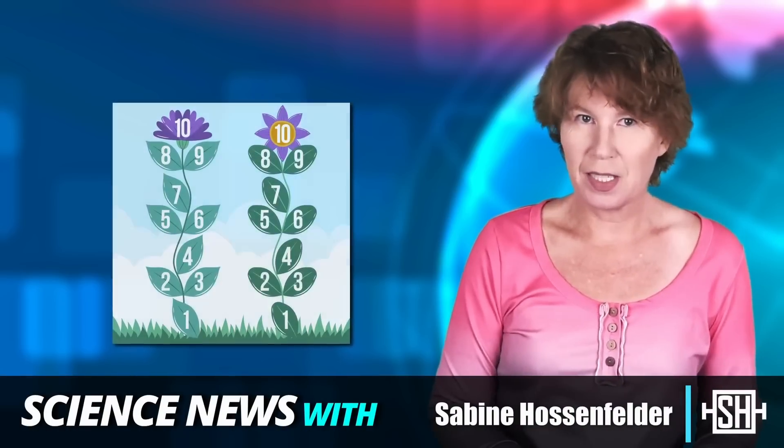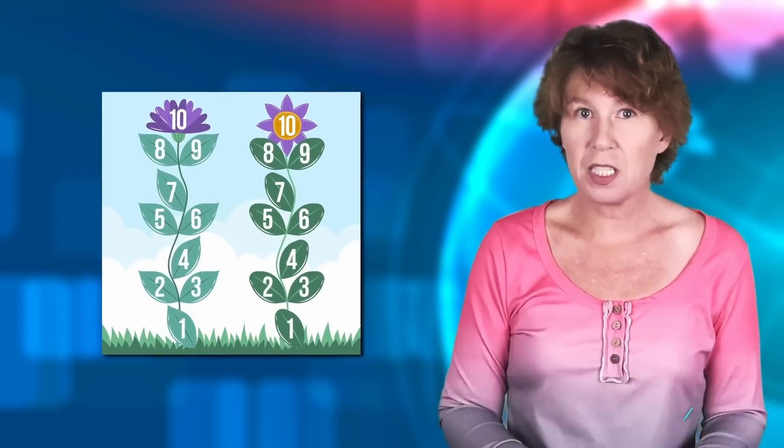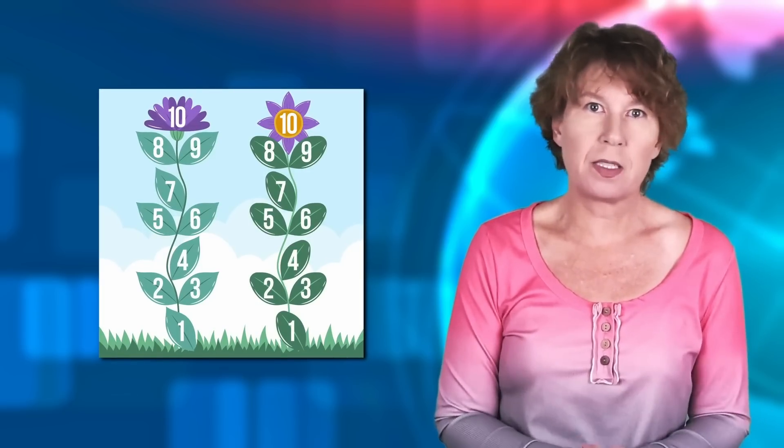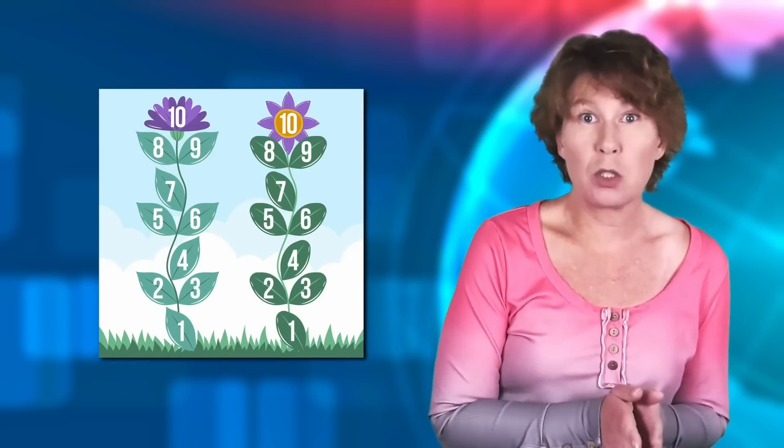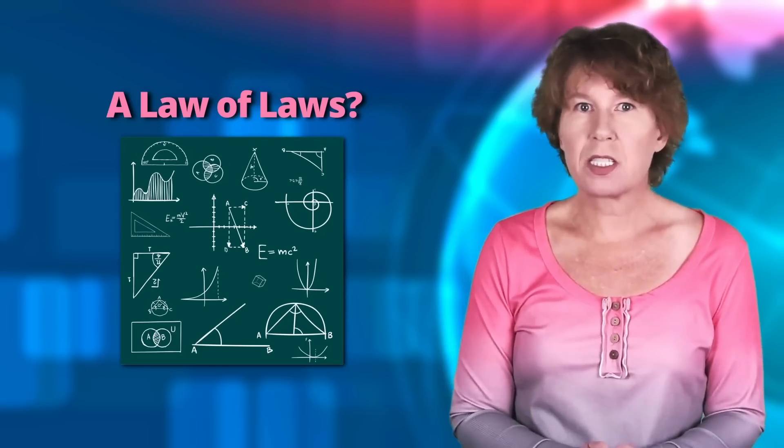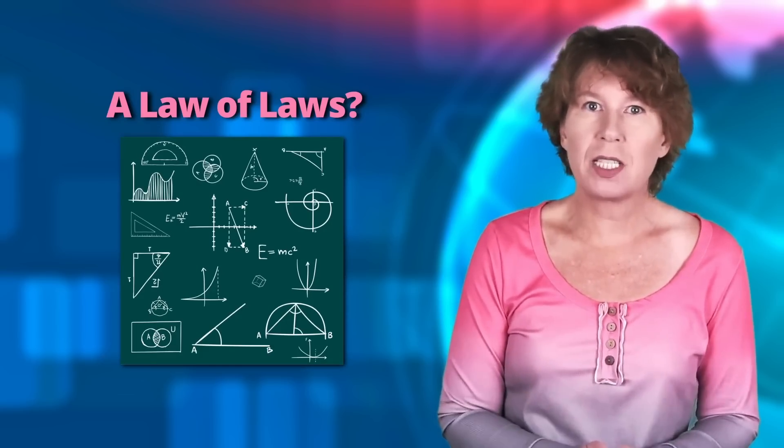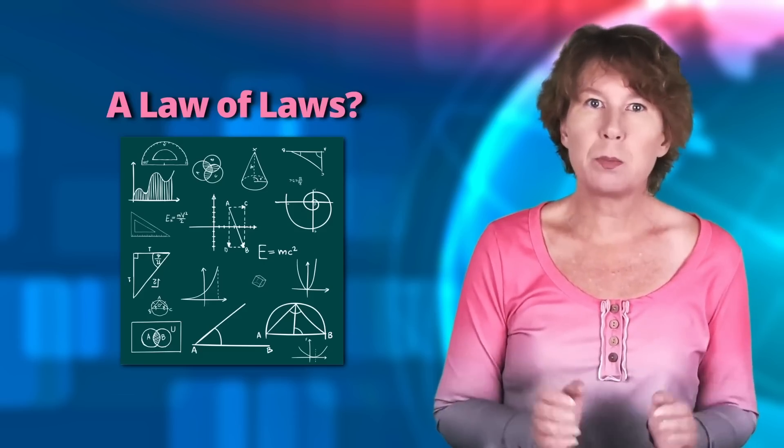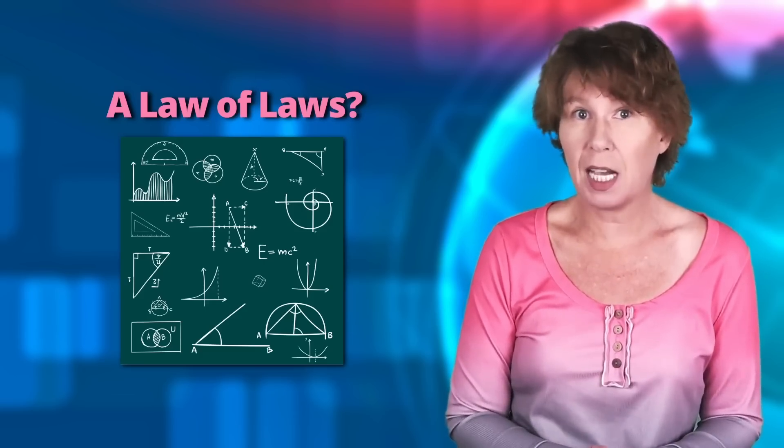If physics has taught us one thing, it's that nature's a mathematician. But she's picky and uses only some maths. Why this maths and not any other? A group of researchers has found some intriguing regularities in the mathematics of physical laws that might bring us a step closer to finding out.